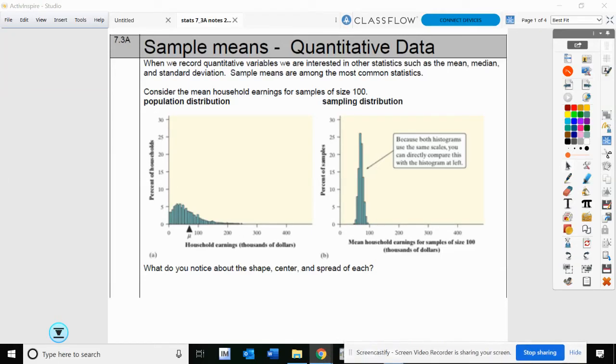Welcome back AP Stat students. We're going to look at section 7.3, sampling distributions for means, so quantitative data.